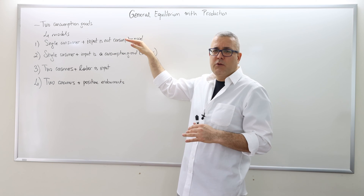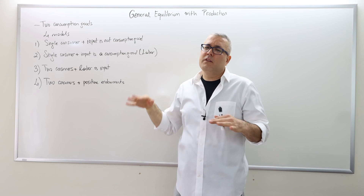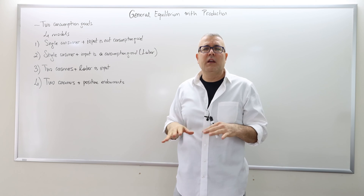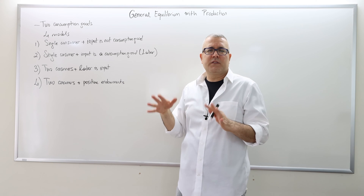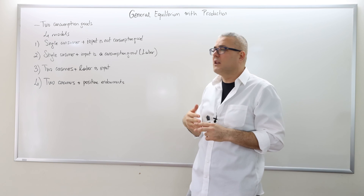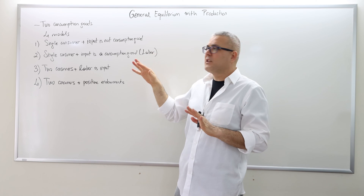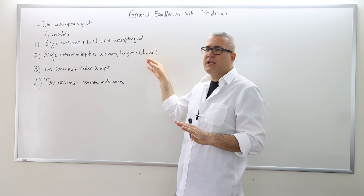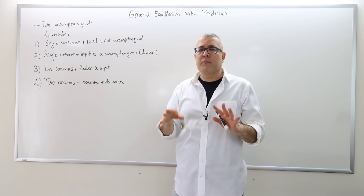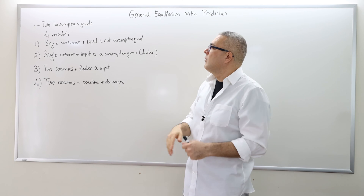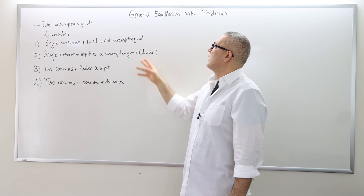The first model is going to be the simplest, and then the third and fourth models will be the unrestricted models, so they're going to be slightly more complicated. If you clearly understand the first and the second model, then the third and the fourth will be easier to follow. So let's talk about some basic characteristics of those models.